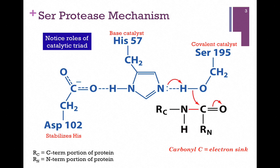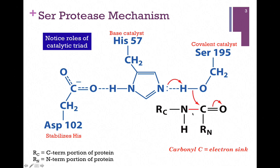Here we have the catalytic triad in blue in the active site: serine, our covalent catalyst; histidine, our base catalyst; and aspartate, which stabilizes histidine by means of a hydrogen bond. Here's the substrate, our peptide, and the bond to be broken is the red line. We have the amine group and the carbonyl group as part of that peptide bond. We call the bond to be broken the scissile bond — just as scissors are used to cut things, the scissile bond is the bond to be cut or broken.